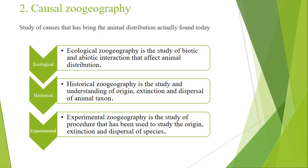The next branch is historical zoogeography. In historical zoogeography we study and understand the origin, extinction, and dispersal of animal taxa. We study the history of animal species — if a species existed in a particular era or period, we study the origin of that species. If the species no longer exists, we study its fossils and the reasons for its extinction. In historical zoogeography we take a single animal or single taxon for study.